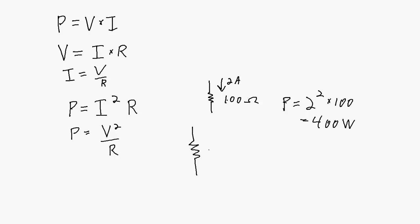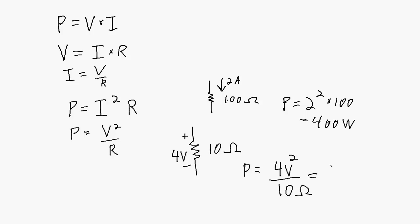Similarly, substituting I equals V over R gives power equals V squared over R. For example, a 10-ohm resistor with 4 volts across it: power equals 4 squared divided by 10, which works out to 1.6 watts. I hope you learned a little bit about electrical energy and power, and I'll see you in the next video.